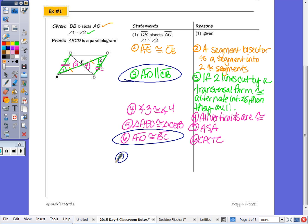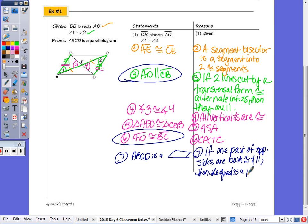So number seven would be that ABCD is a parallelogram, if you want to look at the top of your page, which I'm just going to copy that down, if one pair of opposite sides are both congruent and parallel, then the quadrilateral is a parallelogram.